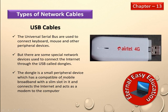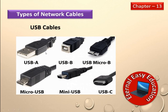The dongle is a small peripheral device which has compatibility with mobile broadband, with a SIM slot in it. Previously it was a big modem device, but now it is a very small compact device that connects to the internet and acts as a modem for the computer. There are some varieties in the USB cable: this is A type, this is B type, this is Micro-B type, this is Micro USB, and this is Mini USB.